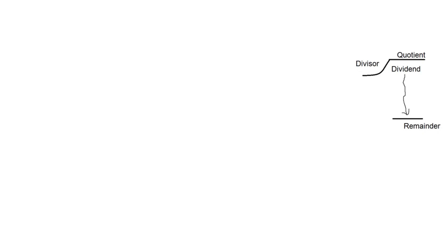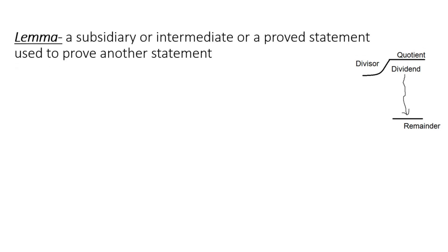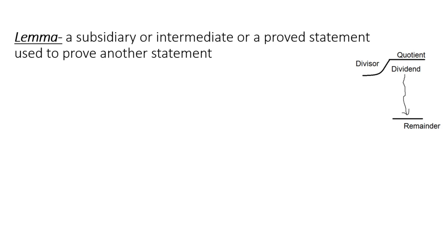Now coming to the next concept. We talked about division algorithm and division terminology. Now, lemma — it is a new word. A lemma is simply a subsidiary or intermediate, already proved statement used to prove another statement. These are simple rules or statements which are proved already, and we can use these proved statements to find other results or prove other theorems. This division algorithm has a statement that can be used to prove some other results, that's why it is called a lemma.